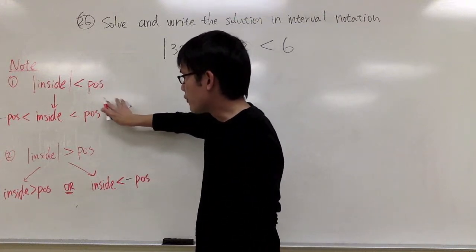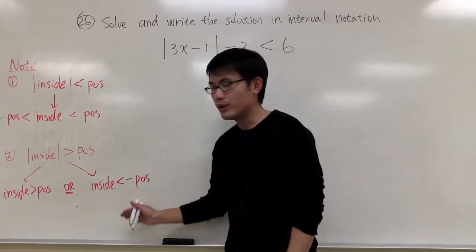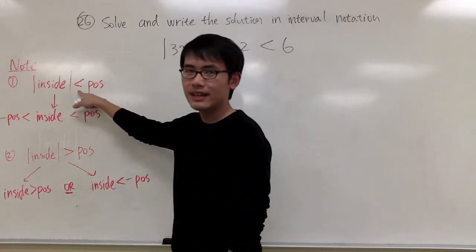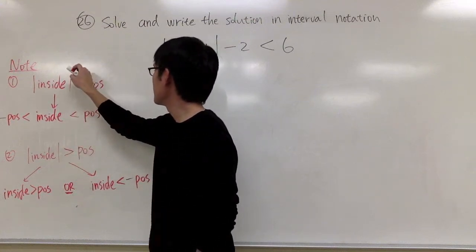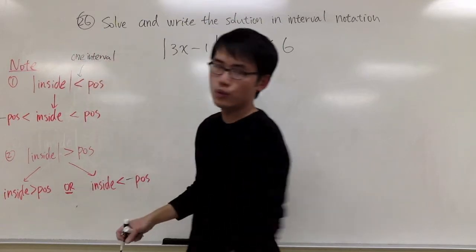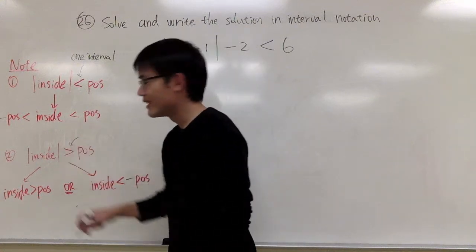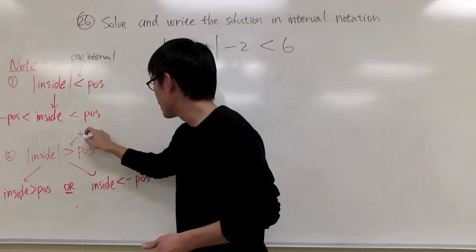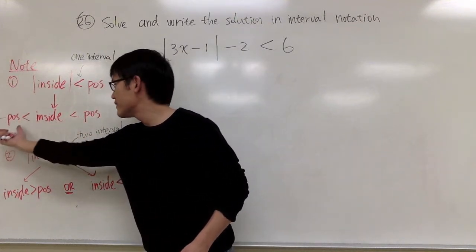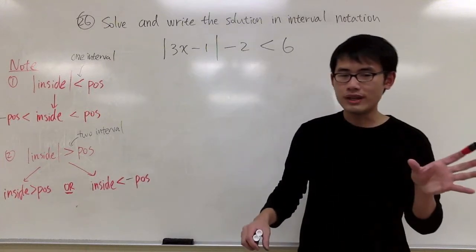The result of the first situation gives you one interval, and the second situation gives you two intervals. The way I like to remember this: when you have less than, you have less intervals — just one. When you have greater than, you have more intervals — two intervals. One interval means the solution is between the negative and positive number; two intervals means you split into two ends, one to the left and one to the right.